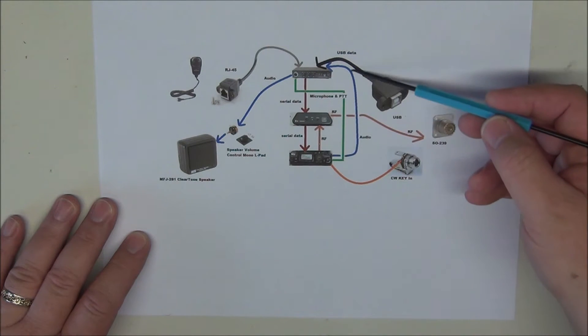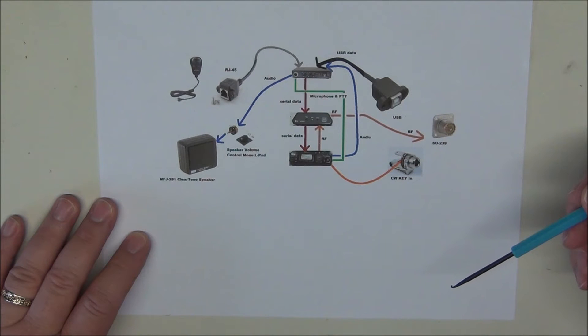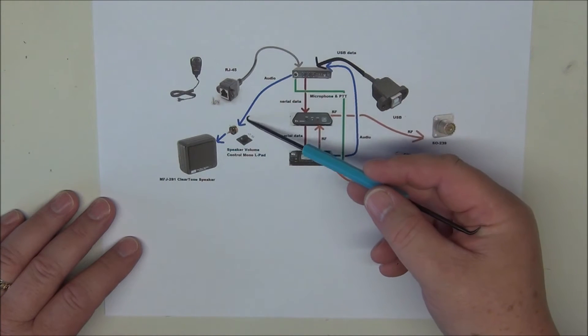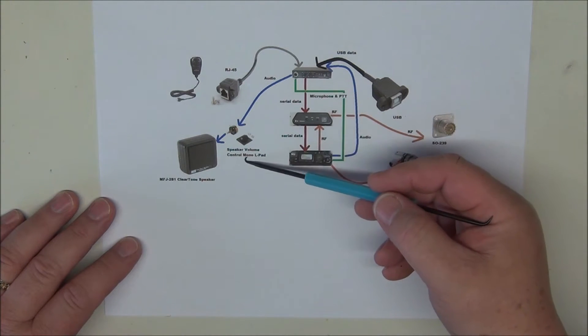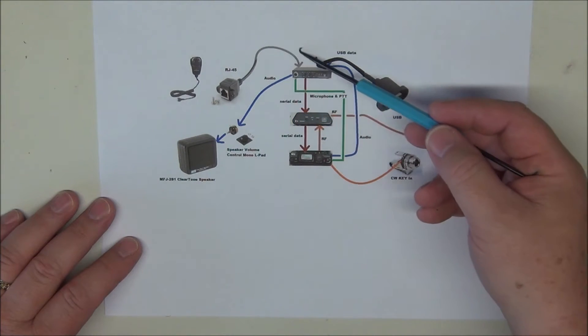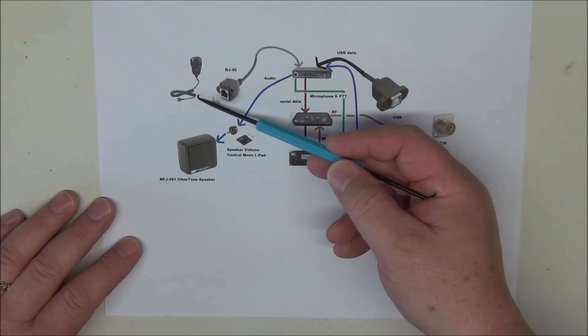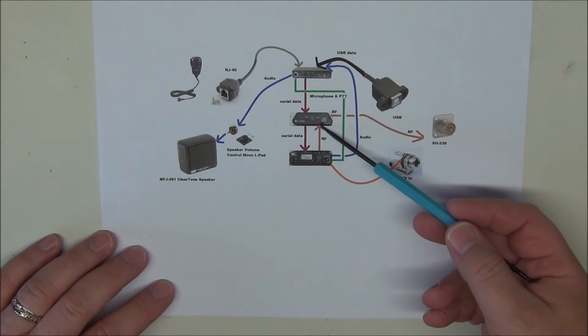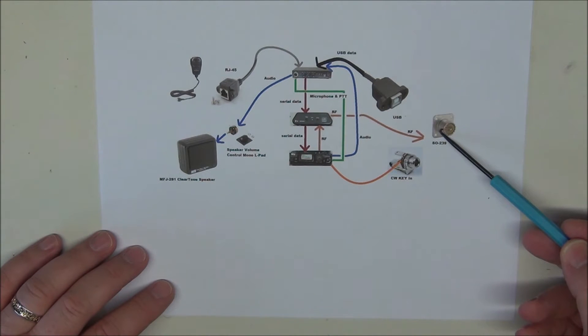Our audio comes out of the radio and into the Rig Blaster. We're going to be panel mounting a USB jack on the front so that I can plug my computer into the top of the panel. We're going to take audio out of the Rig Blaster through a volume control called an L-Pad and into an MFJ clear tone speaker. We're also going to be taking a panel mounted RJ45 into the Rig Blaster and this will allow us to use the factory Yaesu microphone. RF from the radio into the Z817 and onto a top panel mounted PL SO239.